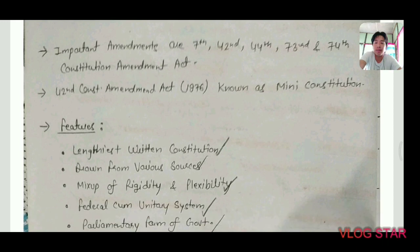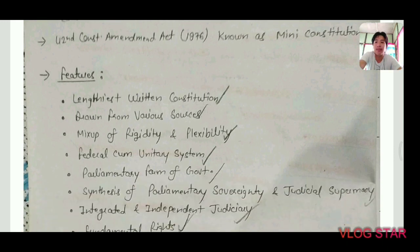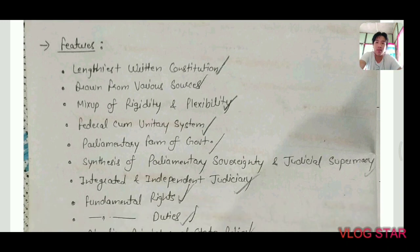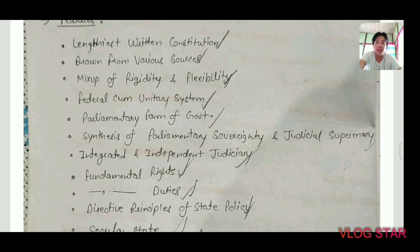One salient feature of the Indian Constitution is that it is the lengthiest written constitution. It is written, consisting of 395 articles, 12 schedules, and 24 parts — which is why it is called the lengthiest constitution, though it is one of the lengthiest, not the absolute lengthiest. It is also drawn from various sources, which is why the Indian Constitution is called a 'bag of borrowings.'